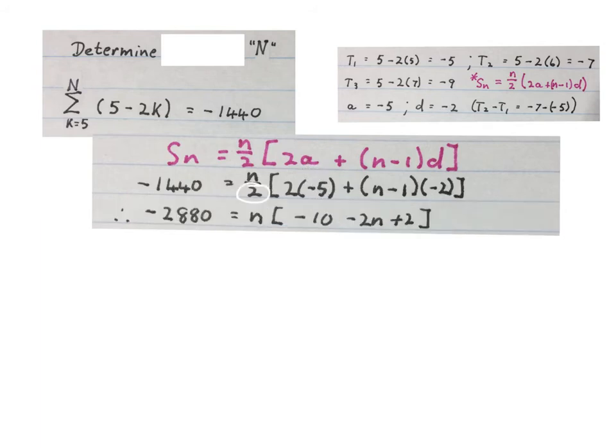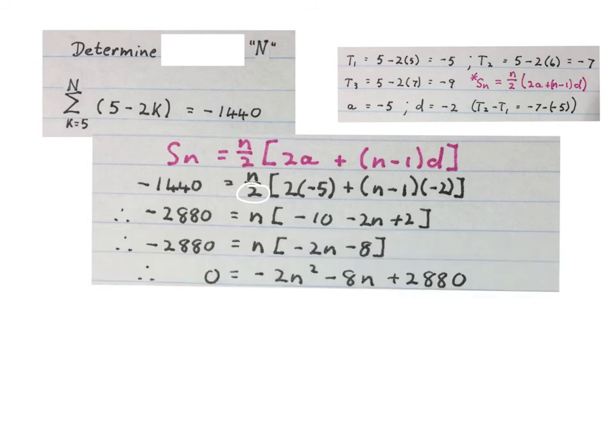Now we simplify this equation. We first times by the LCD on both sides, that 2, we times on both sides. Then we simplify the equation further. Then because we see we have a quadratic equation, we take everything to one side and equate it to zero.